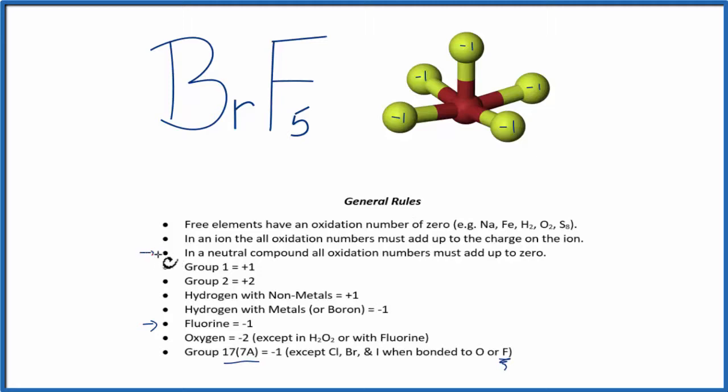But we can use this rule that says in a neutral compound, all the oxidation numbers, they're going to add up to zero. So when we add all these numbers up and the oxidation number for bromine, it has to equal zero.